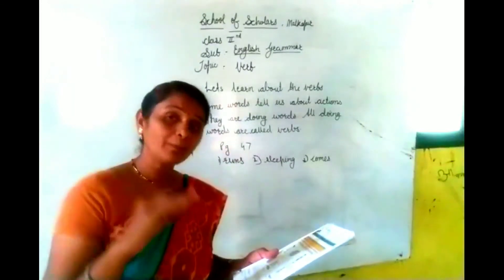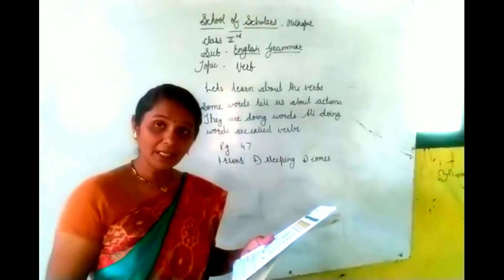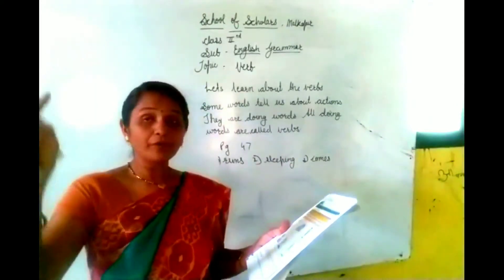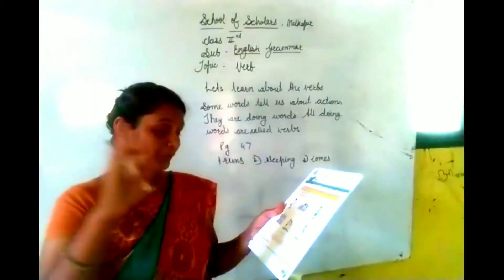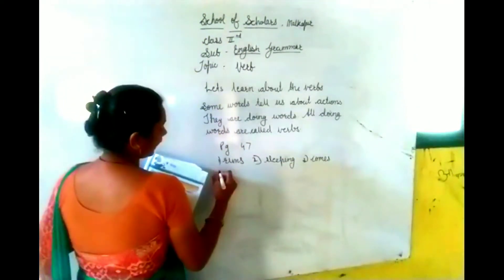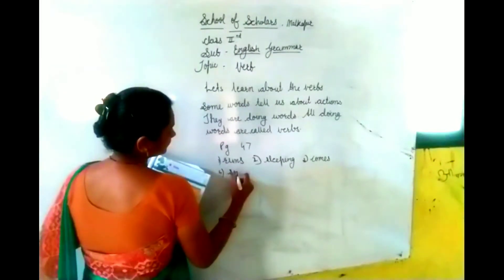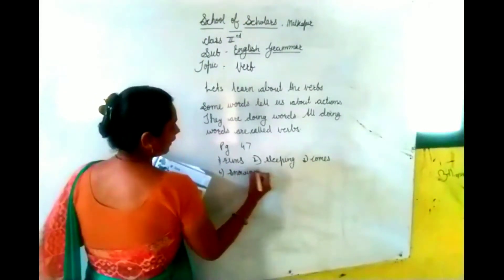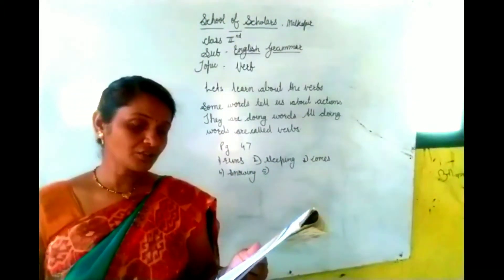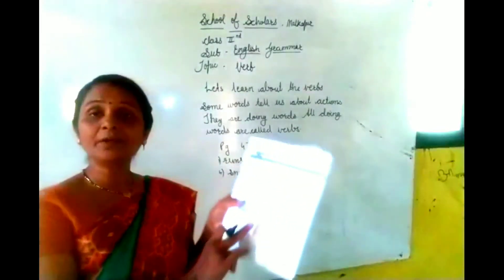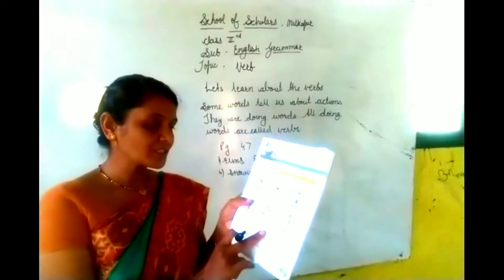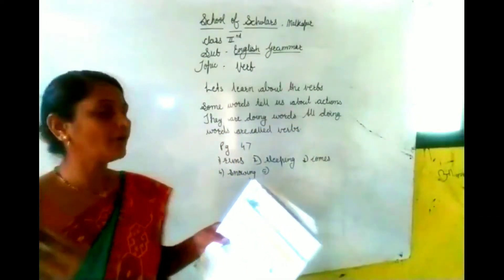Seth wapas aaya — wapas aane ki action. What is snowing? Here is a picture of snow. So: it is snowing heavily. Snowing is an action. Sanju and Rajesh dance — they are dancing.